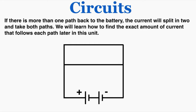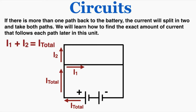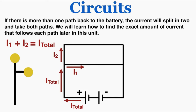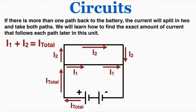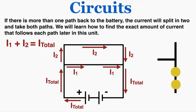If there's more than one path back to the battery, the current will split and take both paths. We'll learn how to find the exact amount of current in each path later in this unit. In this circuit, current comes out of the positive end as a total current, and right at the junction it splits into two smaller currents — I1 and I2 — which together add up to the total current. It's like a split in a river. So I1 plus I2 equals the total current. Those individual currents continue until they meet up again and reconnect into a single overall current going back through the battery.